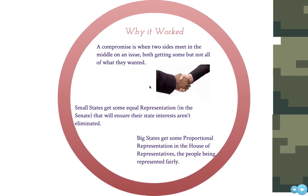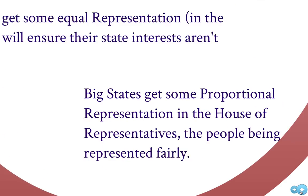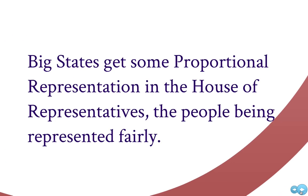You can see the handshake here. The Connecticut Compromise really got this issue worked out because both sides were able to agree on something without losing everything they believed in. Small states got equal representation in the Senate, ensuring their states couldn't be dominated by large states. And the big states got what they wanted in the House of Representatives — the people represented fairly, at least in part of the government.